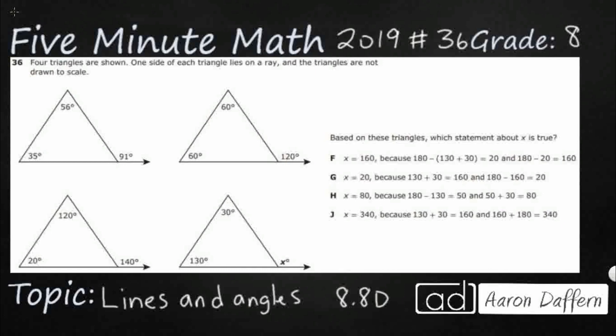We have four triangles, and on each of these triangles we have a ray sticking out. The triangles are not necessarily drawn to scale, which is good because they all look like they are almost equilateral triangles, but their degrees are all different.